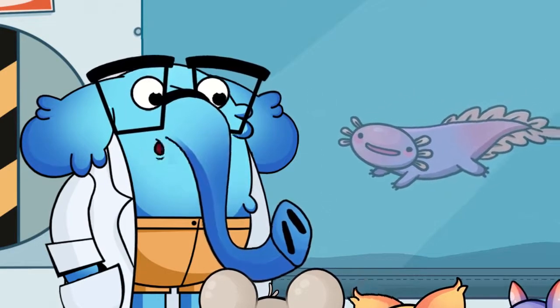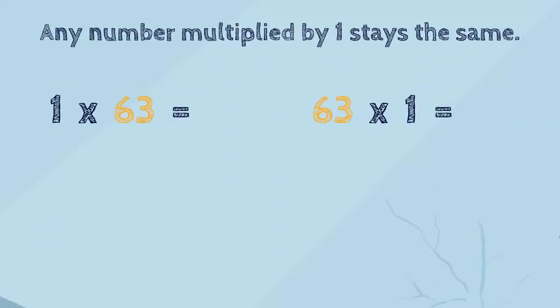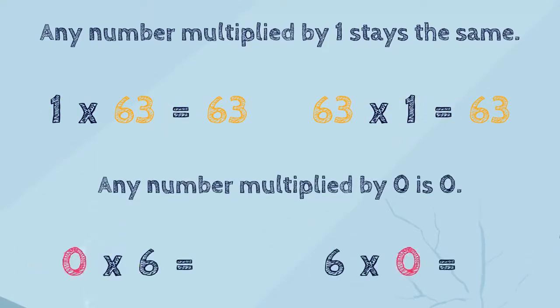Let's repeat the tricks that we've learned today. The first trick is that any number multiplied by one stays the same. The second trick is that any number multiplied by zero makes zero.